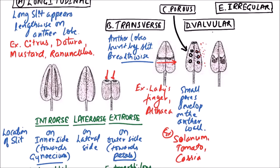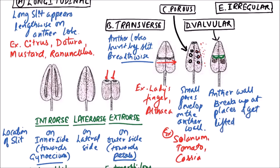The next type is valvular dehiscence. In valvular type, valves or flaps are developed on the anther wall, which get lifted to form valvular structures, exposing the pollen grains. The examples include camphor and barberry.